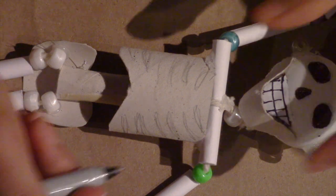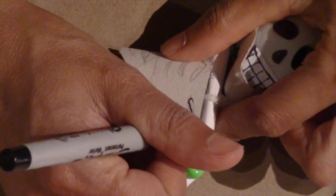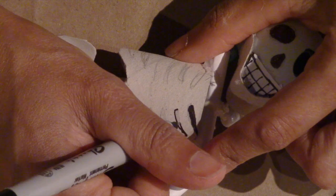For the ribs, you can again start with a pencil sketch and fill in the spaces with black marker or paint.